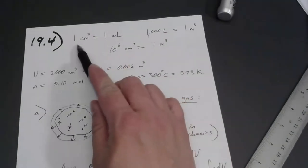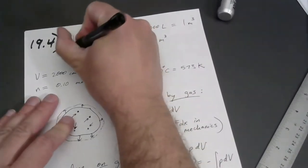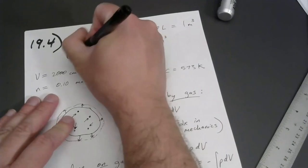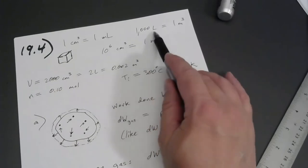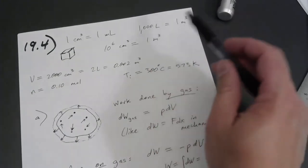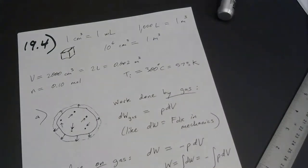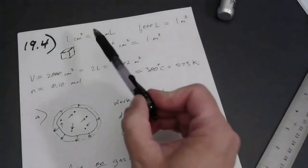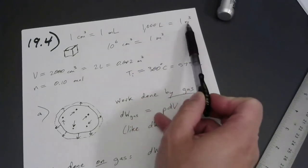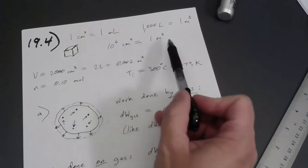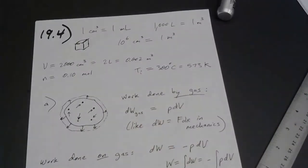First, I'd like to point out that a cubic centimeter is a little box, one centimeter on a side. That's also called a milliliter because it's one thousandth of a liter. A thousand liters would make one cubic meter. If there are a thousand milliliters in a liter and a thousand liters in a cubic meter, that means there are one million cubic centimeters in a cubic meter. It may help you to memorize that a cubic centimeter is 10 to the negative sixth cubic meters.